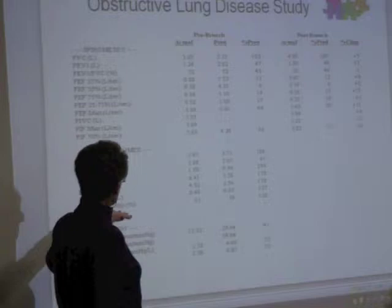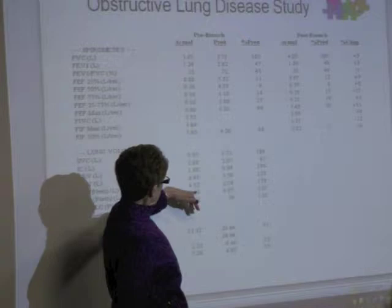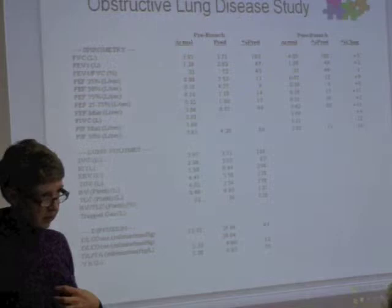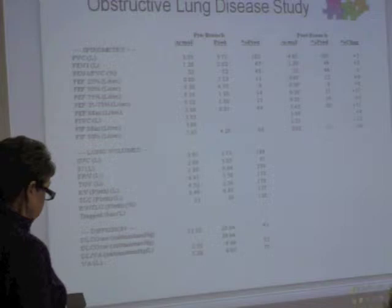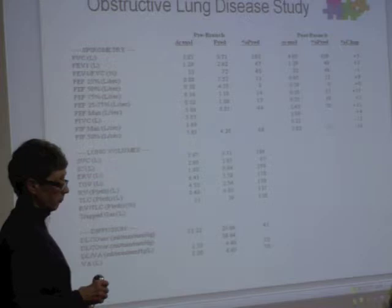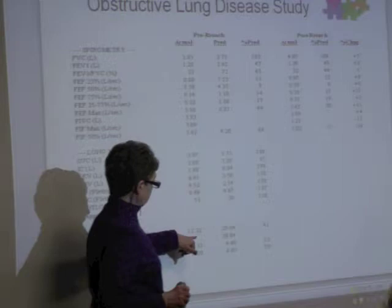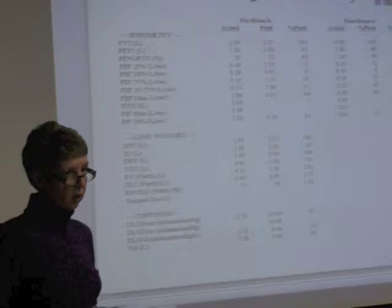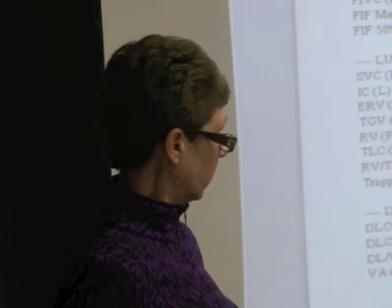Looking at his lung volumes, his residual volume is 4.52 liters versus a predicted 2.54 liters — that's 178% of predicted, which is severe air trapping. It's stale air left in his lungs that doesn't do him any good and is actually harmful. Bigger is not better here. His diffusion capacity — the ability of oxygen to move from his lungs into his bloodstream — is 12.32 versus a predicted 29.64, so his diffusion rate is only 41%. We call that moderate, though he's almost at the severe threshold of below 40%.